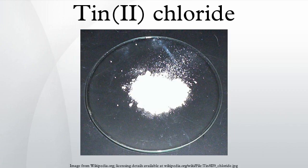For example, the reaction with dicobalt octacarbonyl: SnCl2 + Co2(CO)8 → (CO)4Co–SnCl2–Co(CO)4. Preparation. Anhydrous SnCl2 is prepared by the action of dry hydrogen chloride gas on tin metal. The dihydrate is made by a similar reaction using hydrochloric acid: Sn + 2 HCl → SnCl2 + H2. The water is then carefully evaporated from the acidic solution to produce crystals of SnCl2·2H2O. This dihydrate can be dehydrated to anhydrous SnCl2 using acetic anhydride.